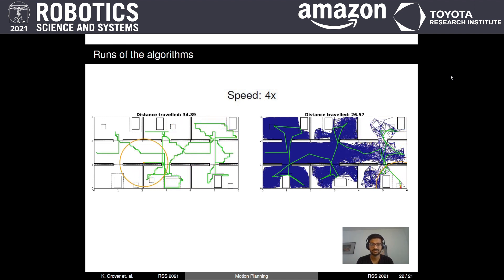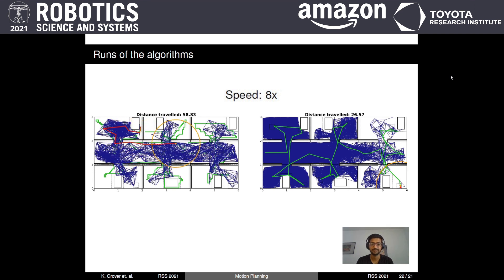As we can see, in the left approach, the robot spends a lot of time just exploring the environment in contrast to the right side, where the robot explores and searches at the same time, resulting in a much shorter trajectory.